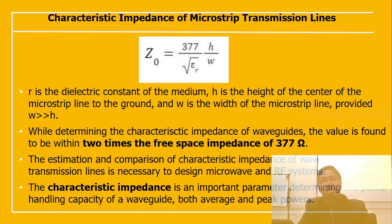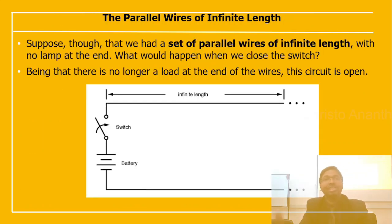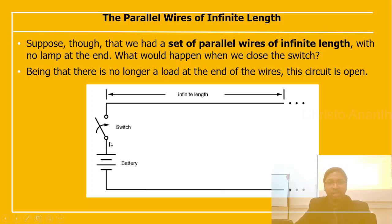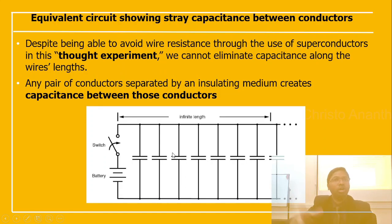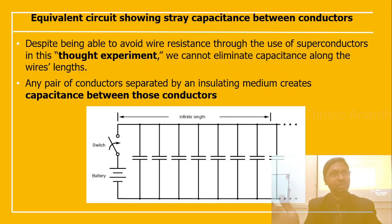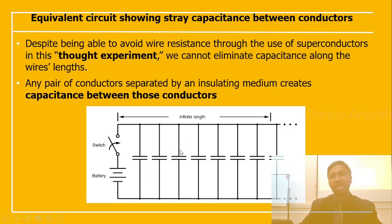Characteristic impedance is a very important parameter for determining the power handling capacity of the waveguide, both average and peak power. Consider parallel wires of infinite length with no load at the end — the circuit is open. Despite using superconductors to eliminate wire resistance, we cannot eliminate the capacitance along the wire length. Any pair of conductors separated by an insulating medium creates a capacitance between them. The voltage applied between two conductors creates an electric field, and energy stored in that field results in opposition to changes in voltage.